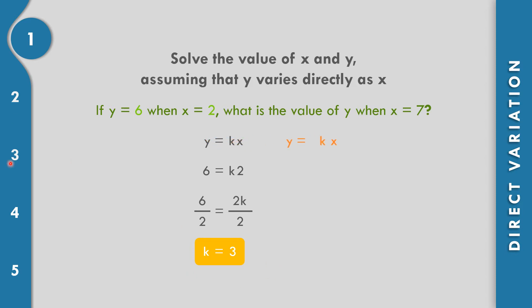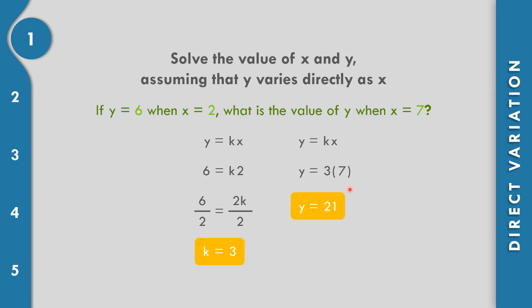Now let us find y when x equals 7. We have y equals k times x, so y equals 3 times 7, which is equal to 21. So the value of y is equal to 21.